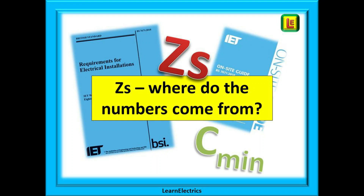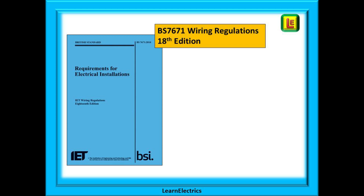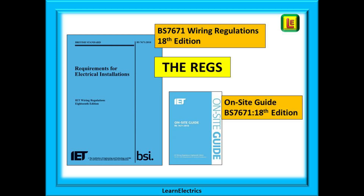Welcome to another Tech Tips video from LearnElectrics. When we measure ZS, the earth fault loop impedance, with a test meter, we have a number displayed that we can compare to the charts in the on-site guide. But what does this actually mean to us? Where do these numbers come from? They are not randomly plucked from the air — they have been calculated with the safety of persons in mind. For this session we will be using the 18th edition wiring regs and the 18th edition on-site guide, often shortened to OSG.